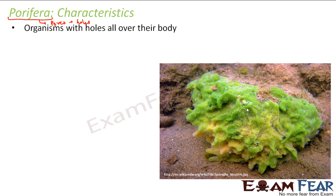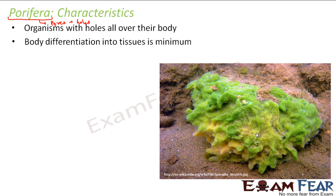If you look at this picture very minutely, you can see that there are small holes all over the body. Body differentiation into tissues is minimum. The basic component of the body is the cell, but cells have not combined together to form tissues, so tissues are not seen much. Therefore, no specific organs like stomach or kidneys are found.